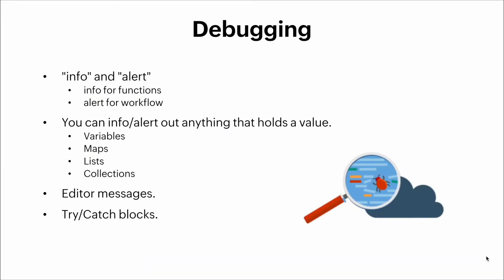Now let's talk a little bit about debugging. We have different tools given to us by Deluge to help us debug or find errors within our code. We get the info and alert features — info is used within functions and alerts are used within workflows. You can info and alert out anything that holds a value, including variables, maps, lists, or collections. Besides info and alert, we also get editor messages and try/catch blocks. Let's actually do some debugging so you can see how these tools get applied.